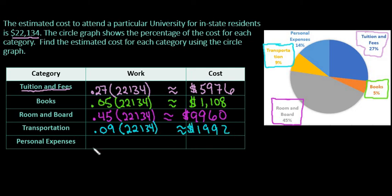And then our last category is personal expenses. This might be like food or things that come up that you have to pay for personally. And so our last category is 14% of our expenses. So we would do 0.14 times 22,134, and we get approximately $3,099.